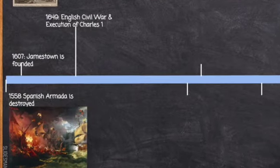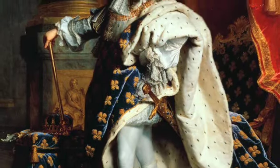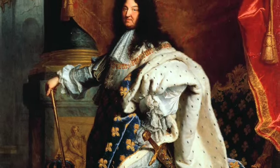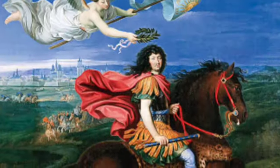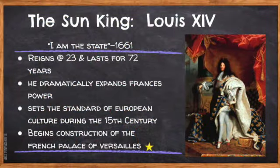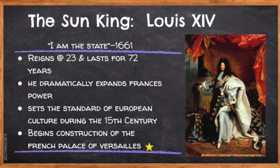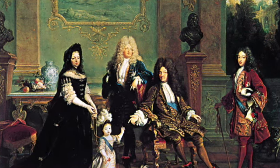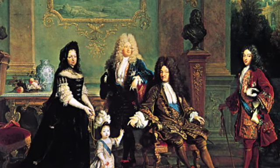While England is in the midst of its civil war and a power struggle between Parliament and the King, in France power is consolidated under the reign of Louis XIV, the Sun King. Louis calls himself the Sun King because he's the source of light for all of his people — just as the sun is the center of the solar system, the king would be the center of power for France. During Louis's 72-year reign, he strips nobles of their power and increases the power of the monarch. He sets the standard for European culture and begins construction of the Palace of Versailles, which becomes a symbol of French power.